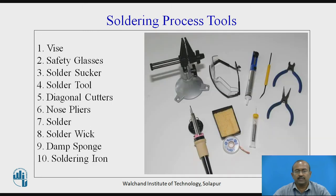Soldering process tools: the image shows the varieties of tools that can be used for the successful conduction of the soldering process. These include: vice, safety glasses, solder suckers, soldering tool, diagonal cutters, nose pliers, solder, solder wick, damp sponge, and soldering iron.